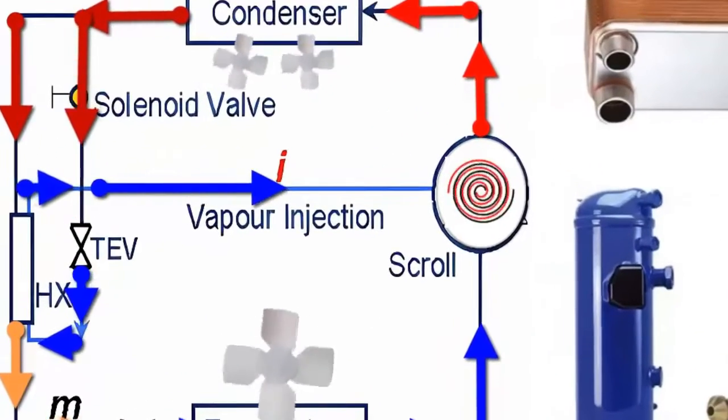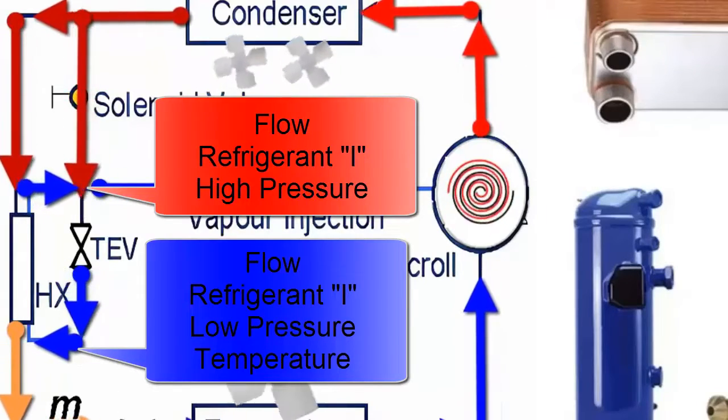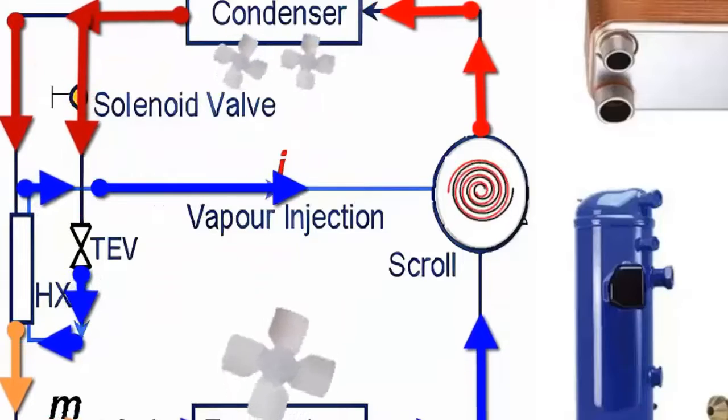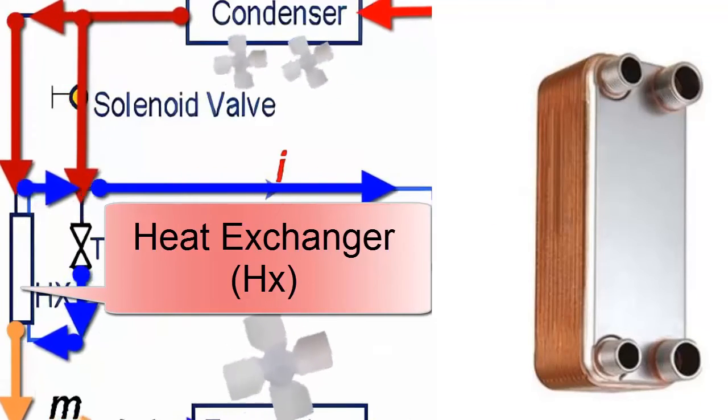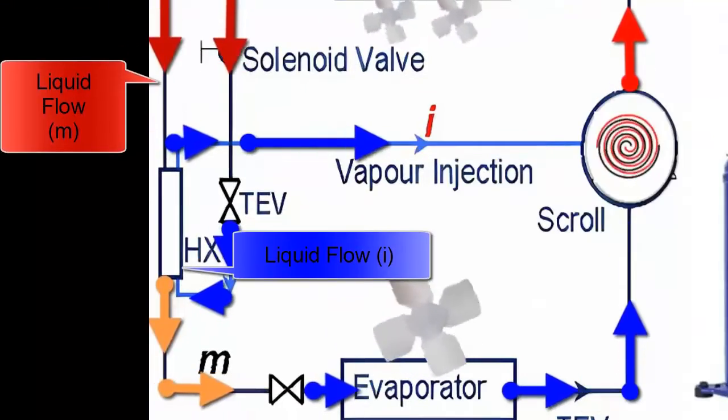After the expansion valve of the economizer system, the use of a heat exchanger, which we'll call HX, is required to generate sub-cooling in the liquid refrigerant flow, denoted as M, coming from the condenser through the traditional refrigeration cycle pipeline.